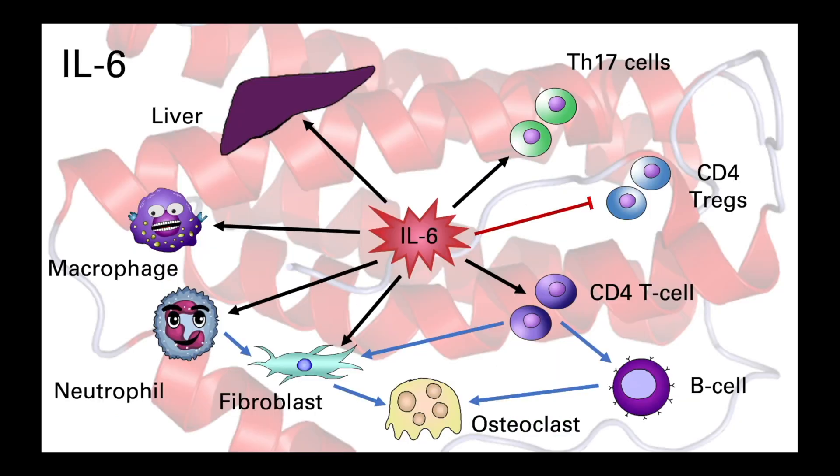Similarly, interleukin-6 can act on a wide range of immune and non-immune cells. Interleukin-6 is acting on T cells, neutrophils and macrophages, as well as those liver hepatocytes driving the acute phase response. Interleukin-6 also has a key role in shaping the adaptive immune response, and we will revisit this later in the course when we look at T and B lymphocytes in more detail.